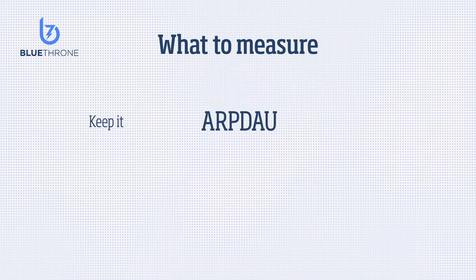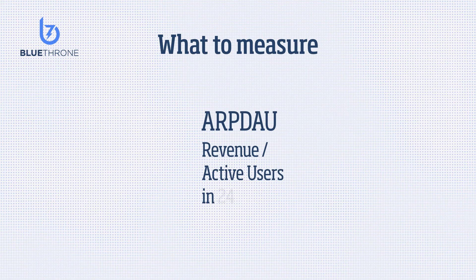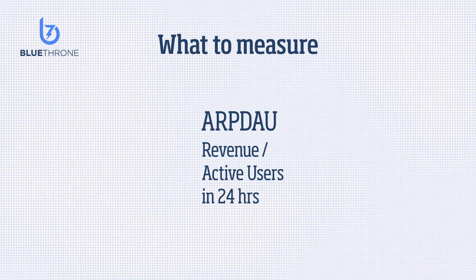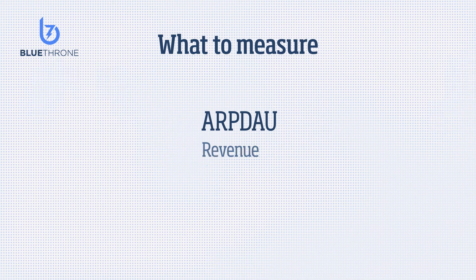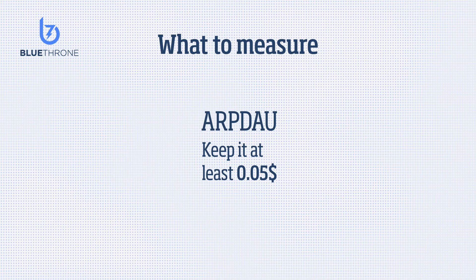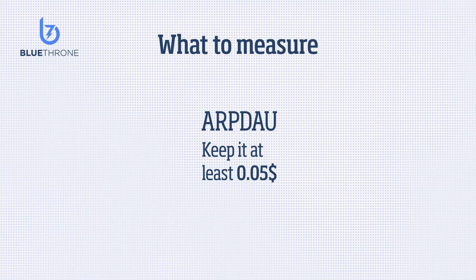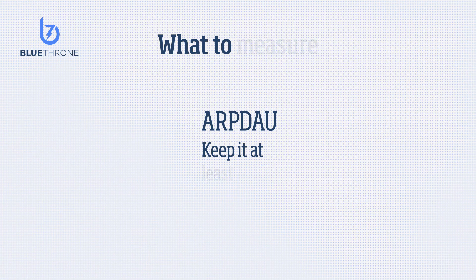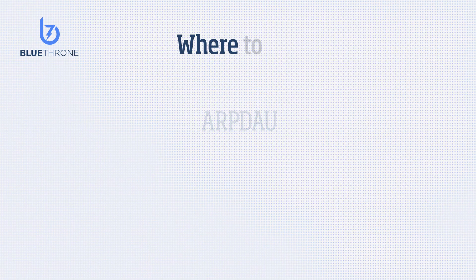To calculate ARPDAU, divide revenue by the number of active users in a 24-hour period. If, in a given month, more users download your app without lowering ARPDAU, your monetization is likely effective.